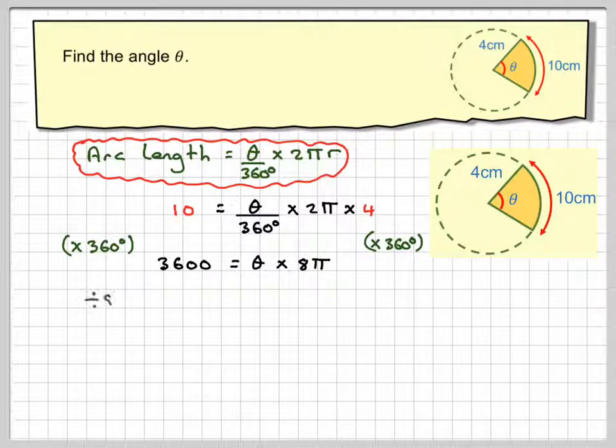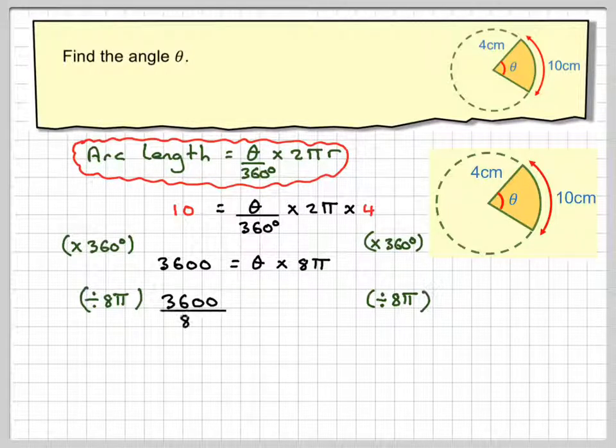Now we're going to divide both sides by 8 pi because we've got multiplied by 8 pi. So dividing both sides by 8 pi, you're going to get 3600 over 8 pi is equal to theta. Now we're using our calculator and again we use the fraction button.